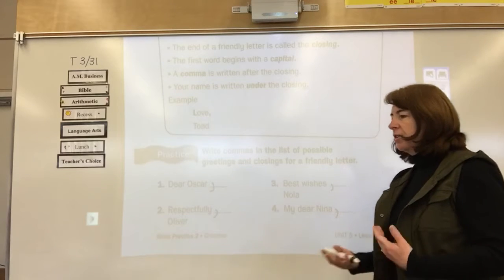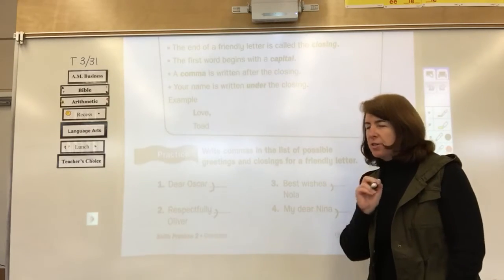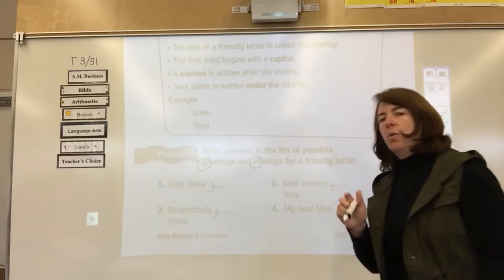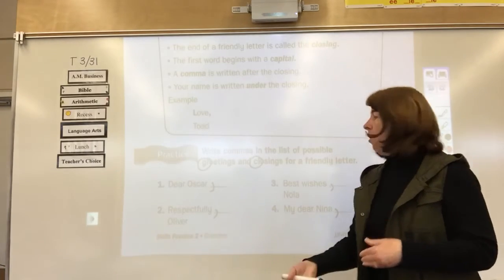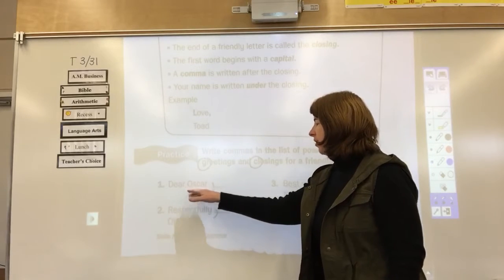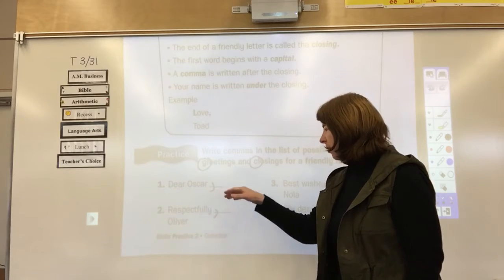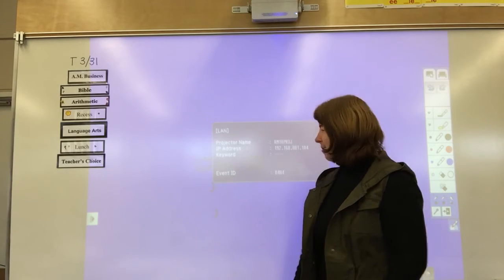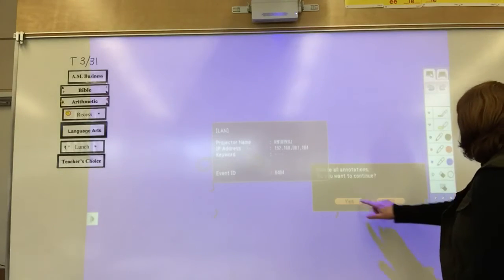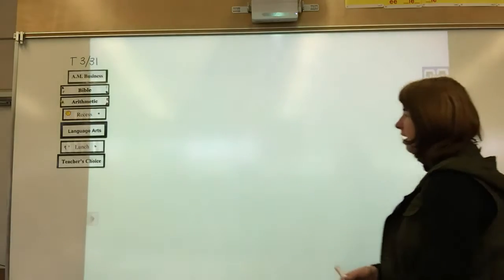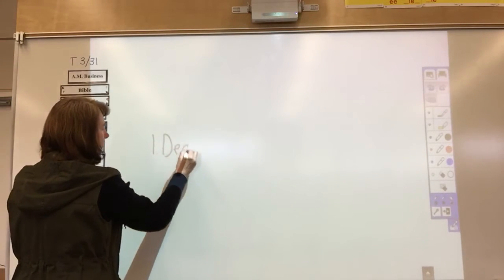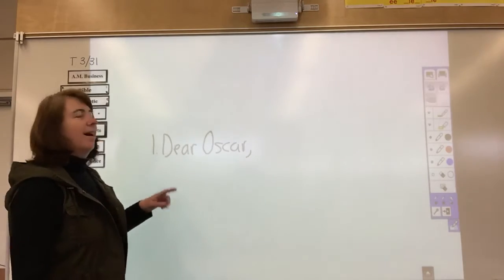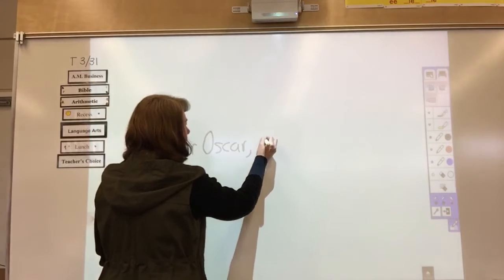So all of these are either greetings or closings and we want to take a look at that. So now I want you to do something different. I want you to circle the G in greetings and circle the C in closings. Now we're going to label each one of these, whether it's a G for greeting or a C for closing. So if I said, dear Oscar, capital D, capital O, comma, dear Oscar, is that a greeting or is that a closing? So your number one says, dear Oscar, comma. Now is that a greeting or a closing? If you said greeting, you're correct. Put a G there.